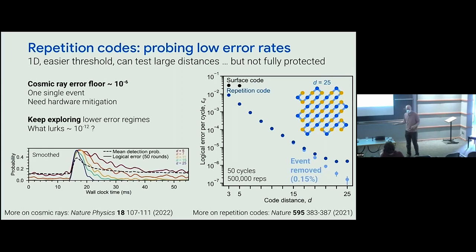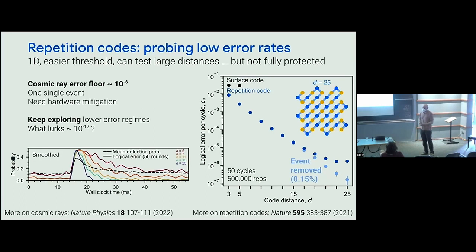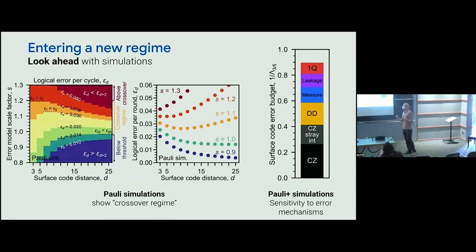Repetition codes are a potentially very interesting tool to continue exploring low error regimes like one in a trillion and figure out what else is lurking in the shadows. If we trim out data after the high energy event, the exponential decay continues down to certainly under one in a million error per cycle. But again, it's not a quantum code — it's protecting a classical bit. In the surface code experiments, distance 3 and distance 5 are performing about the same, with distance 5 a little bit better — meaning we're starting to tiptoe around the threshold regime.